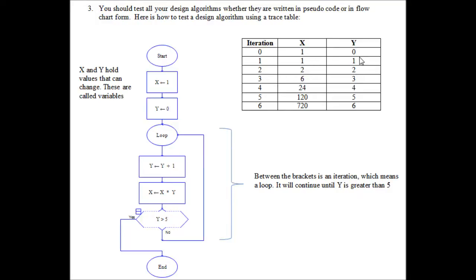This is put into the corresponding iteration 0 of the trace table, setting X to 1 and Y to 0.